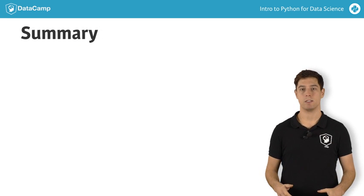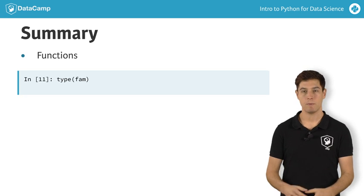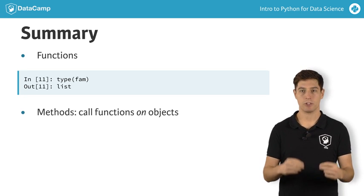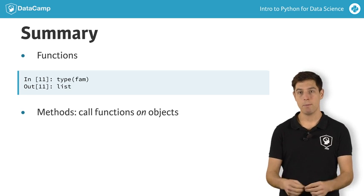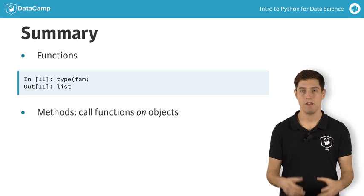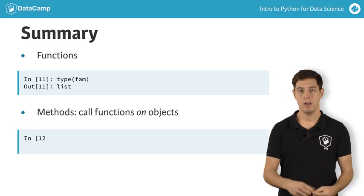Let's take a step back here and summarize this. You have Python functions, like type, max, and round, that you can call like this. There's also methods, which are functions that are specific to Python objects. Depending on the type of the Python object you're dealing with, you'll be able to use different methods, and they behave differently. You can call methods on the objects with a dot notation, like this for example.